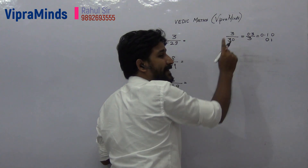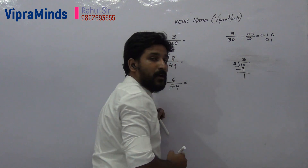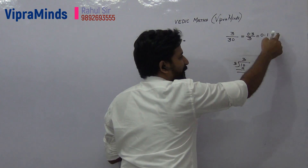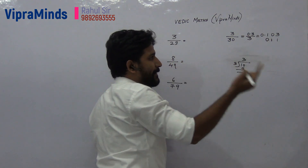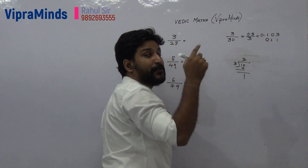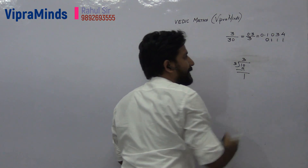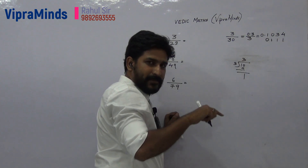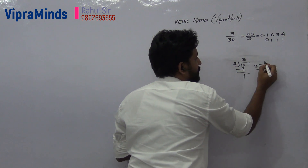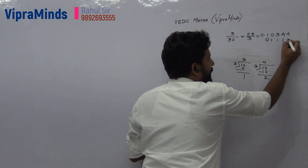Next step: divide 10 by 3. 3 into 3 is 9, remainder is 1. So quotient is 3, remainder is 1. Next number is 13: 3 into 4 is 12, remainder is 1. Then 14 divided by 3: 3 into 4 is 12, remainder is 2.